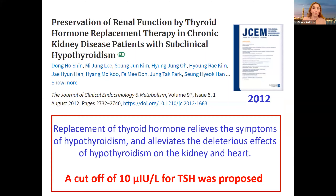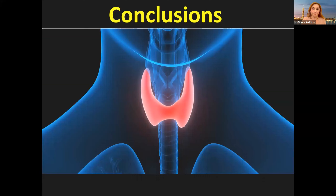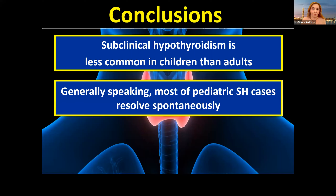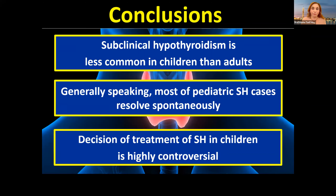My final conclusions for children: subclinical hypothyroidism is less common in children than adults. Generally speaking, most pediatric subclinical hypothyroidism cases resolve spontaneously — nearly 40 percent, which is very good. The decision of treatment is highly controversial. The only fixed information is to treat when TSH is above 10.